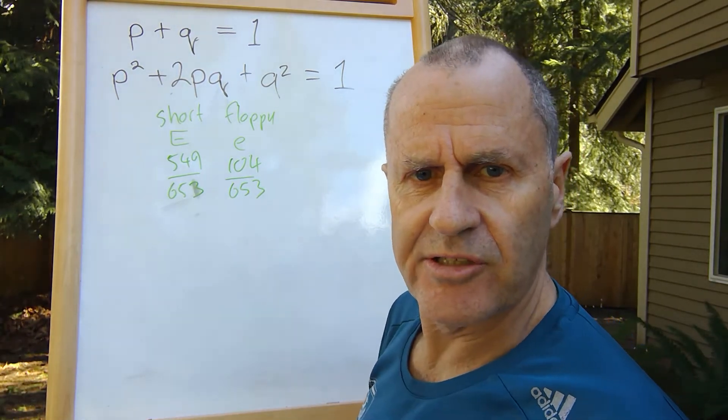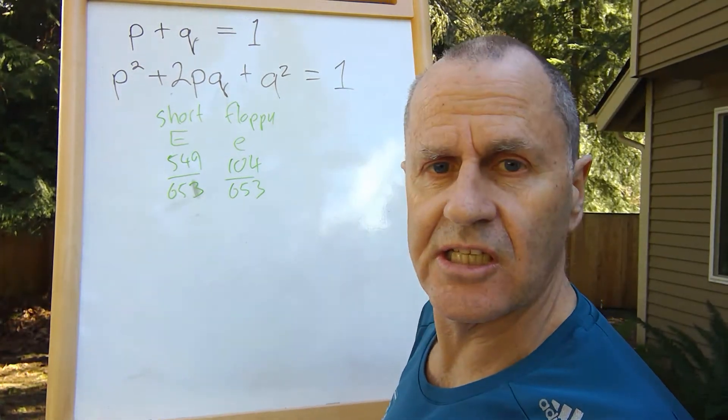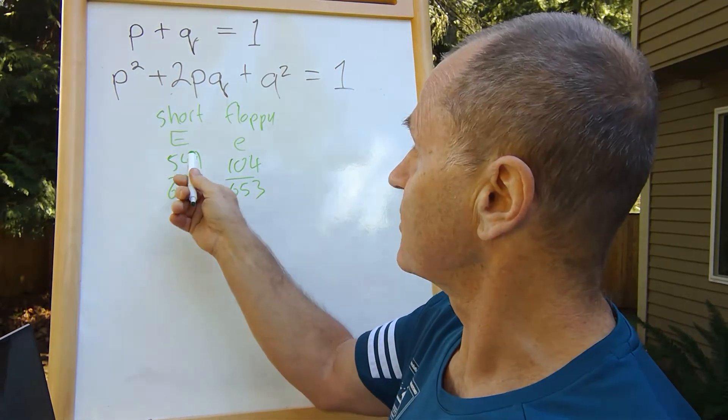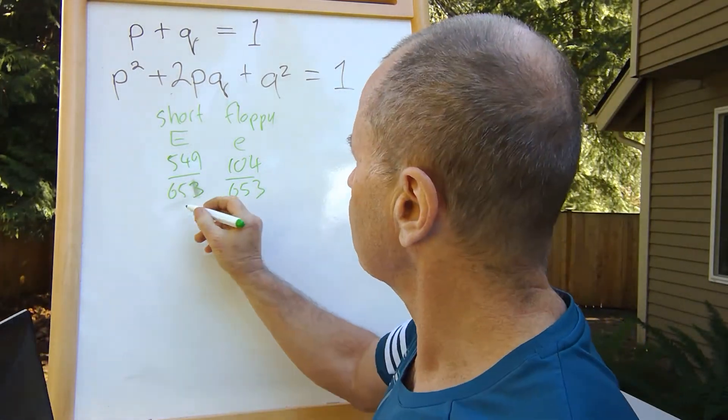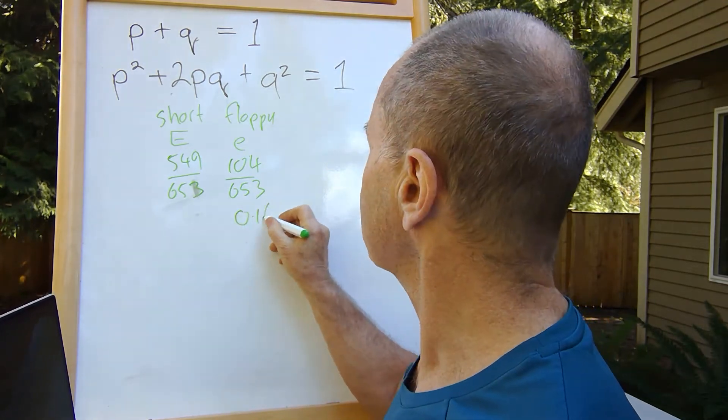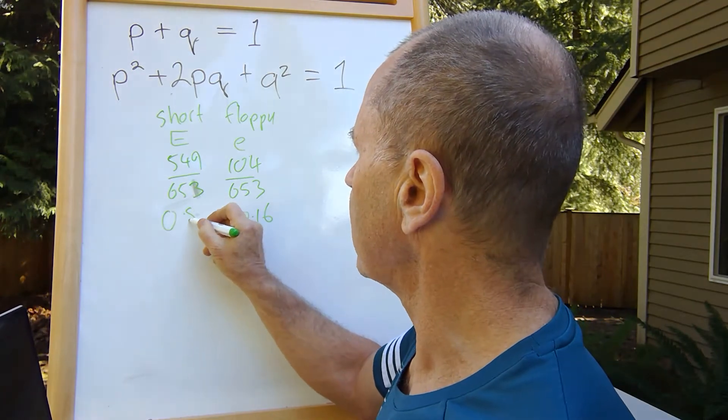So what we do is divide those and convert them into a percentage. It's just the division, and this one ends up as 0.16 and this one ends up as 0.84.